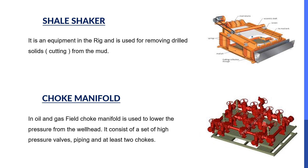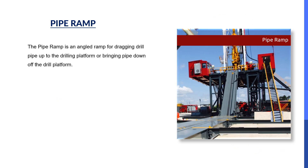The next one is the choke manifold. This is the image of the choke manifold. It has a set of pipes, chokes, and high-pressure valves. In the oil and gas field, the choke manifold is used to lower the pressure from the wellhead. It consists of a set of high-pressure valves, piping, and at least two chokes.